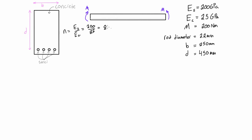That ratio N is equal to 8. We want to transform this to an area that's N times AS. First we need the area of steel, so there are four rods, times pi r squared, which gives us the total area of steel. So we have 4 times pi times the radius of 11 millimeters squared, and that works out to about 4 times 380, which we'll round to 1520 millimeters squared.